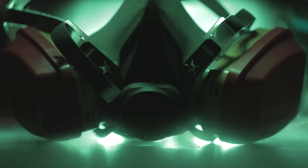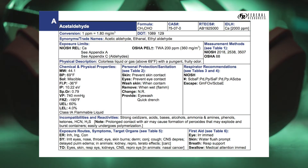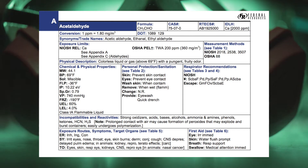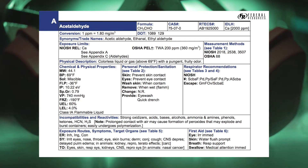We look at the molecular weight. The book says 44. Air weighs 29, so where is it going? Down. Propane weighs 44 and goes down. Acetaldehyde weighs 44 — it goes down.